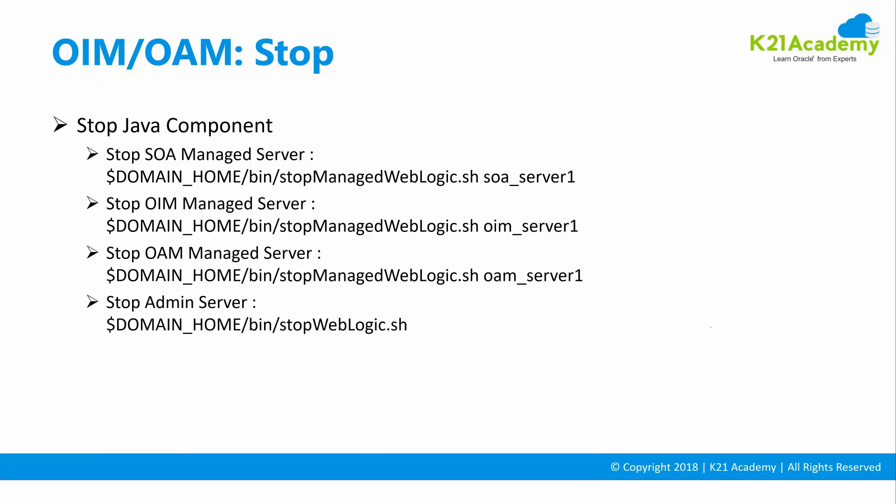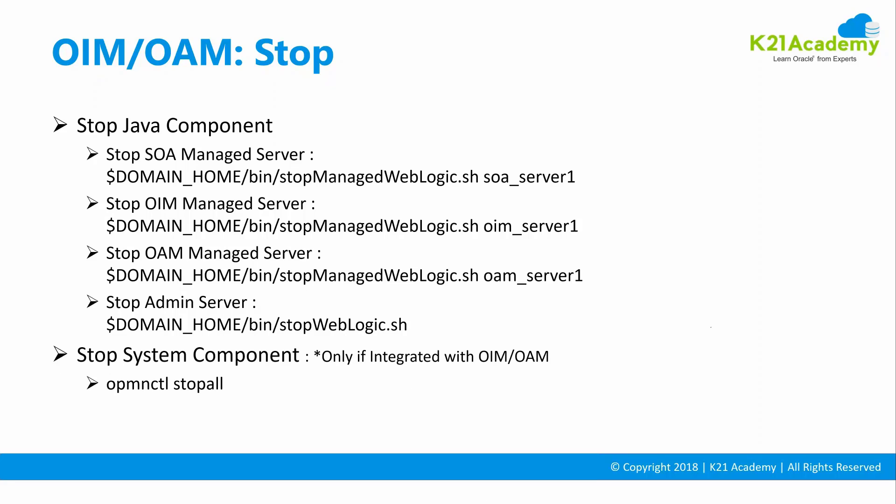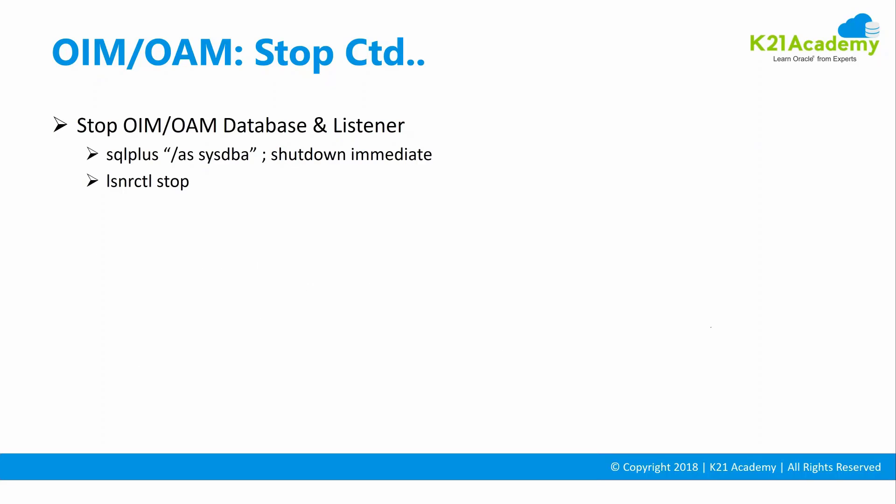You can stop the admin server without stopping managed servers, but if you want to stop everything, follow the proper order. SOA and Oracle Identity Manager can be started and stopped independently, but Oracle recommends one at a time. Then stop the system component OID using 'opmctl stop all'. If you have OUD, use OUD-specific start and stop commands. Finally, stop the database and shut down the database listener.